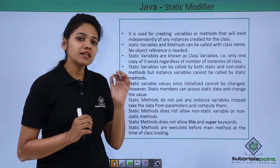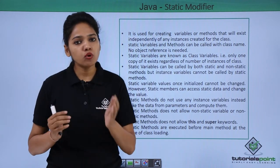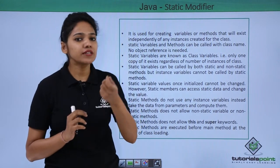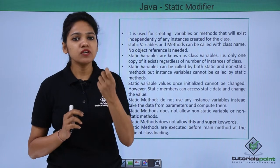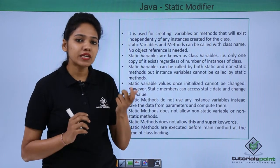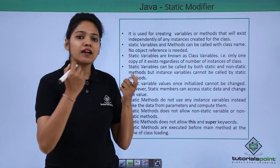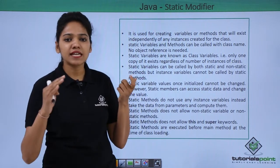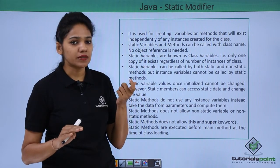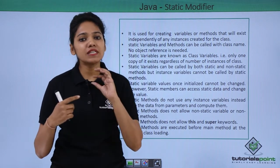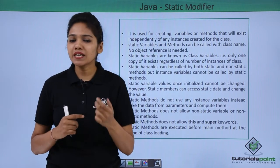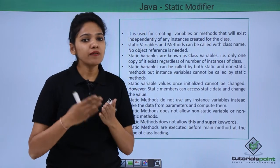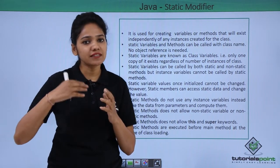Static variables can be called by both static and non-static methods. For example, if you have created a variable 'h' with a value of 10 as a static variable, it can be called under 'sleeping' (a static method), 'walking' (a static method), or 'eating' (a non-static method). But instance variables — those created inside the class without the static keyword and defined outside methods — behave differently.